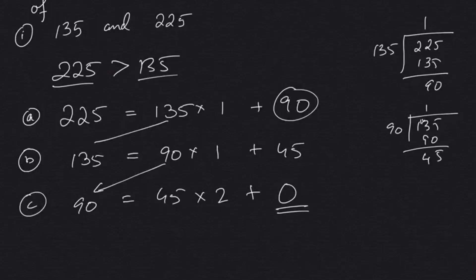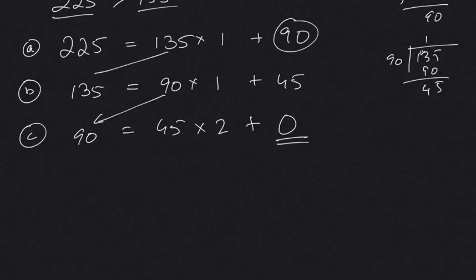Now, only when we have the remainder as 0, we will be stopping. Otherwise, we will just continue. So some problems might take more than 4 or 5 steps also, but we will just continue until we attain 0. So hence, once we have 0, we can clearly see that 45 is an exact divisor of 90. So hence, HCF of 225 and 135 is 45.